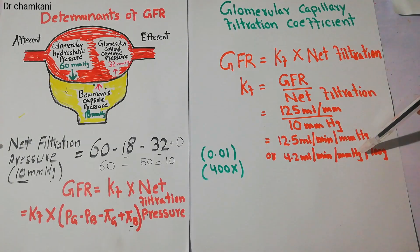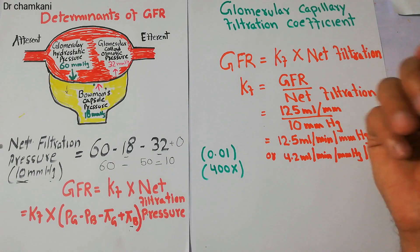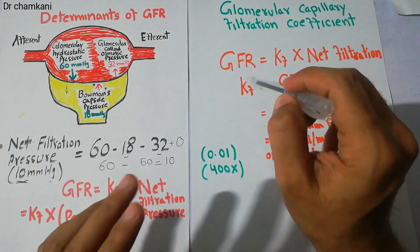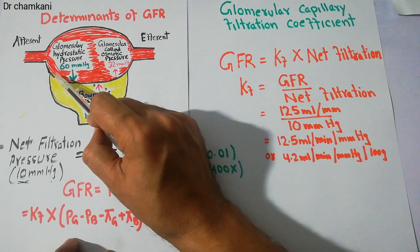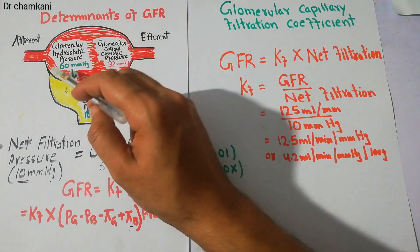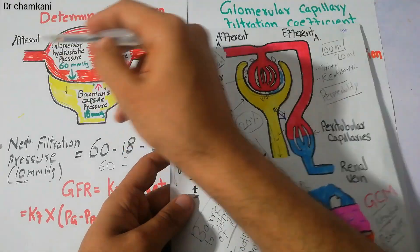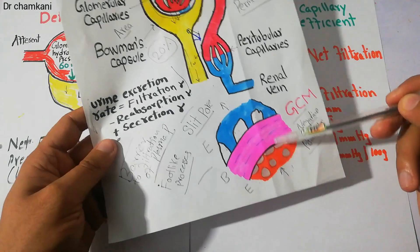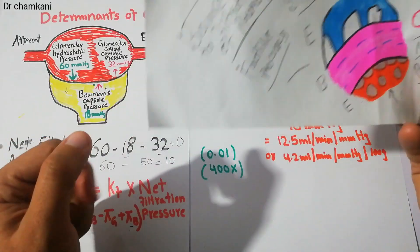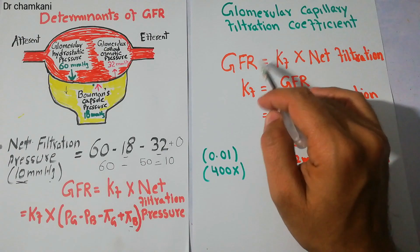This value of 4.2 ml per minute per mmHg per 100 grams of kidney is 400 times more than the capillary filtration coefficient of any other capillary in the body. The filtration coefficient principally depends on two factors: the surface area available for filtration and the permeability of the membrane. The negative charge, slit pores, and fenestrations of the glomerular capillary membrane determine permeability. These two factors — surface area and permeability — determine the filtration coefficient not only in the kidney, but in any capillary.